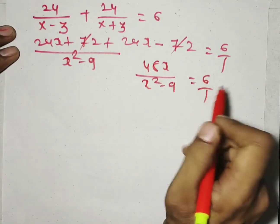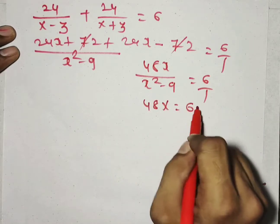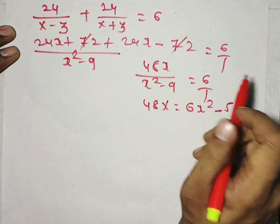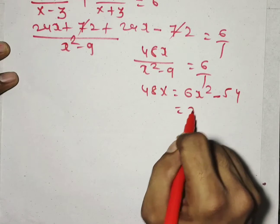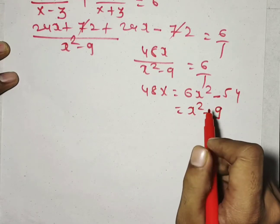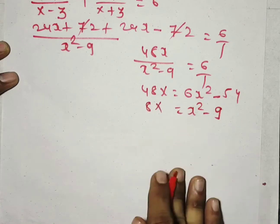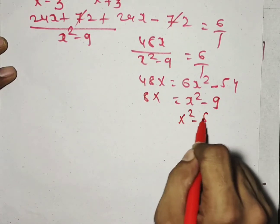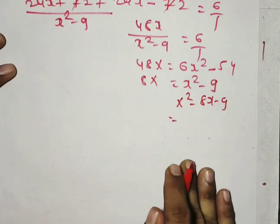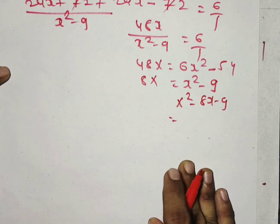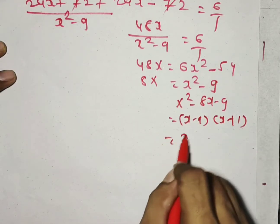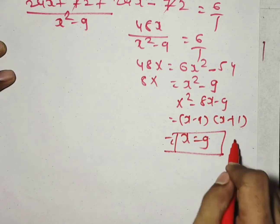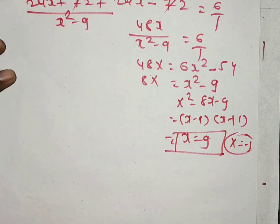Cross-multiplying: 48x = 6(x²−9) = 6x²−54. Dividing all terms by 6: x²−8x−9 = 0. Factoring: the product is 9 and the difference is 8, giving (x−9)(x+1) = 0. So x = 9 or x = −1. Since speed cannot be negative, x = 9 km per hour is the correct answer.